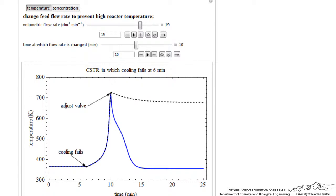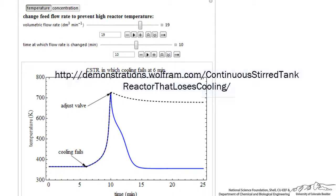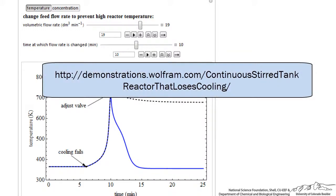One of the things that this demonstration shows is how nonlinear the response is when we have kinetics that have exponential terms for rates of reaction, and then we release a lot of heat from this exothermic reaction. So you can go to the Wolfram site and use this demonstration to get a better feeling for how changing one of these variables affects the behavior of the system.